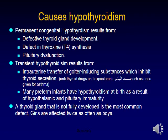The most common causes of congenital hypothyroidism are: a thyroid gland in an abnormal location, known as an ectopic thyroid gland; an underdeveloped thyroid gland, called thyroid hypoplasia; and a missing thyroid gland, known as thyroid agenesis.